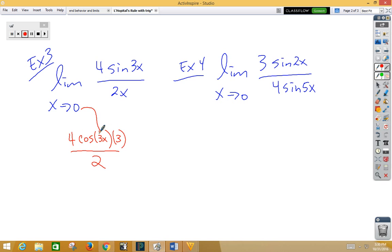Plug in our 0. We end up with 4 times 1 times 3 over 2, which is 12 over 2, which gives us 6. But if we look very carefully, there's our 4 times 3 over 2, which gives us 6.